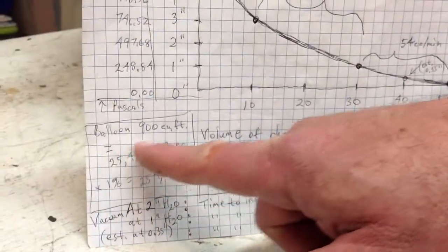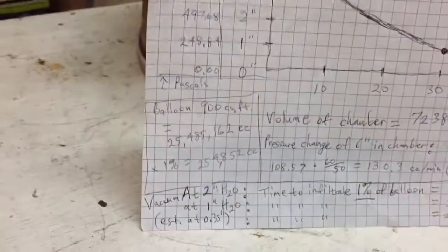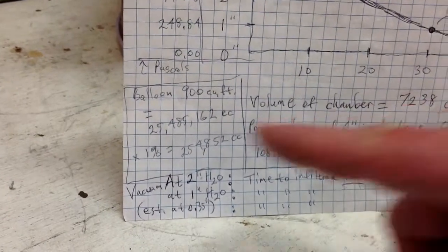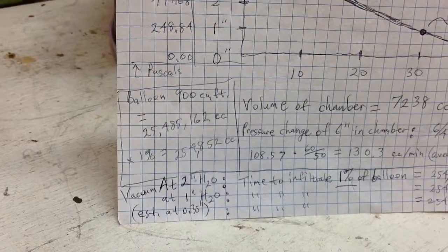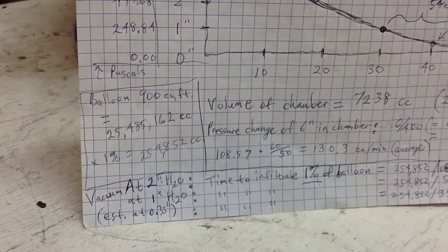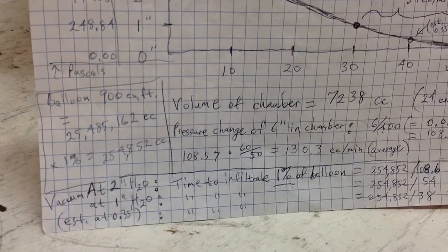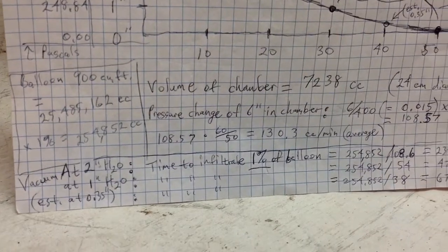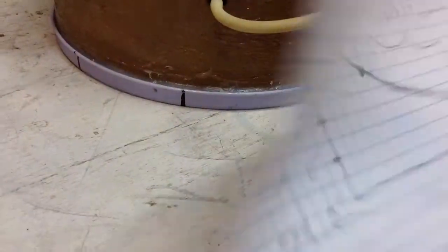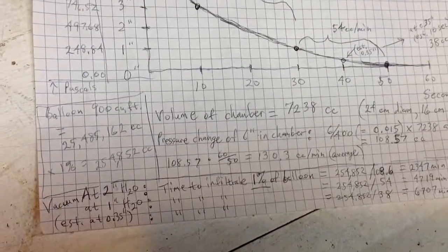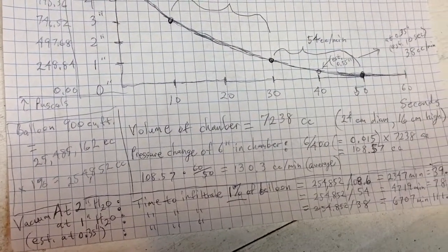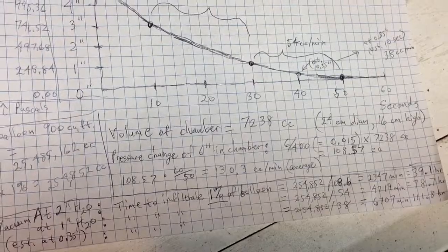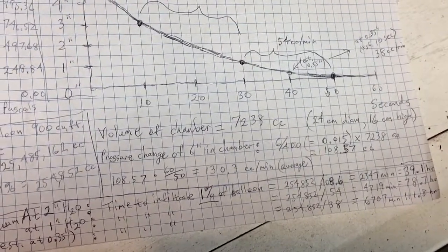So, because of that, if you divide the volume of the balloon, roughly 900 cubic feet for the balloon, which amounts to 25 million something cc's, I took that times 1%, that's 254,852 cc's. 254,000 cc's divided by the number of cc's per minute gives you how many minutes it would take to infiltrate 1% of the balloon with air.